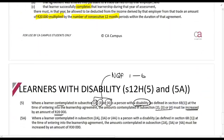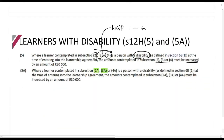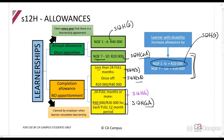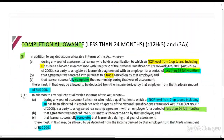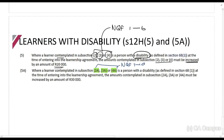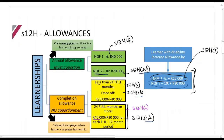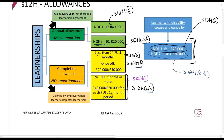Section 12H(5A) covers sections (2A), (3A), and (4A) — those are the NQF 7 to 10 equivalents. Remember: the A sections are always NQF 7 to 10, while sections 2, 3, and 4 are NQF 1 to 6. For NQF 7 to 10 with a disability, the amount must be increased by R30,000.